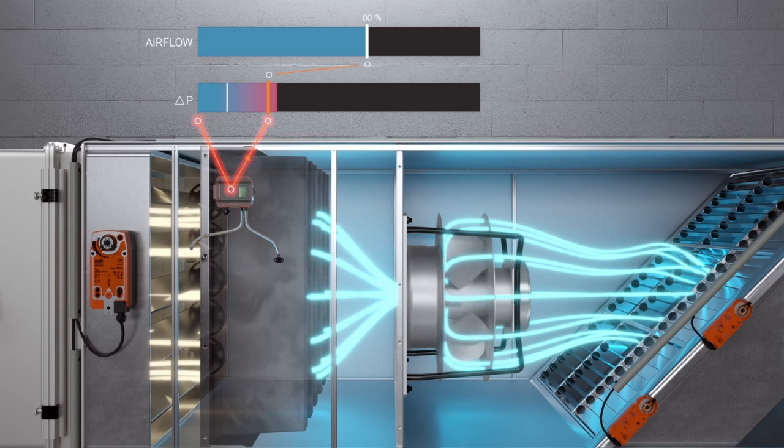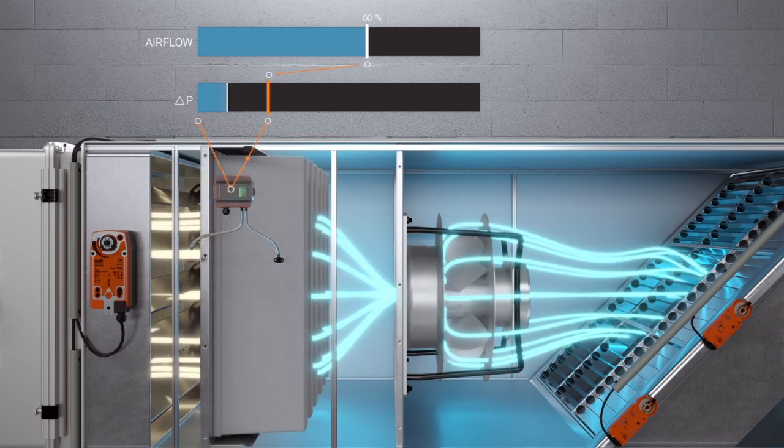To decide whether a switch or a sensor should be used, the intended operating mode of the air handling unit must be taken into account. In summary, the following three points are decisive: Differential pressure switches are suitable for filter monitoring in air handling units with constant volumetric flow. Differential pressure sensors always show the current differential pressure in any operating situation. And if the differential pressure and the air flow volume are known, then the condition of the filter can be reliably assessed even at partial load.